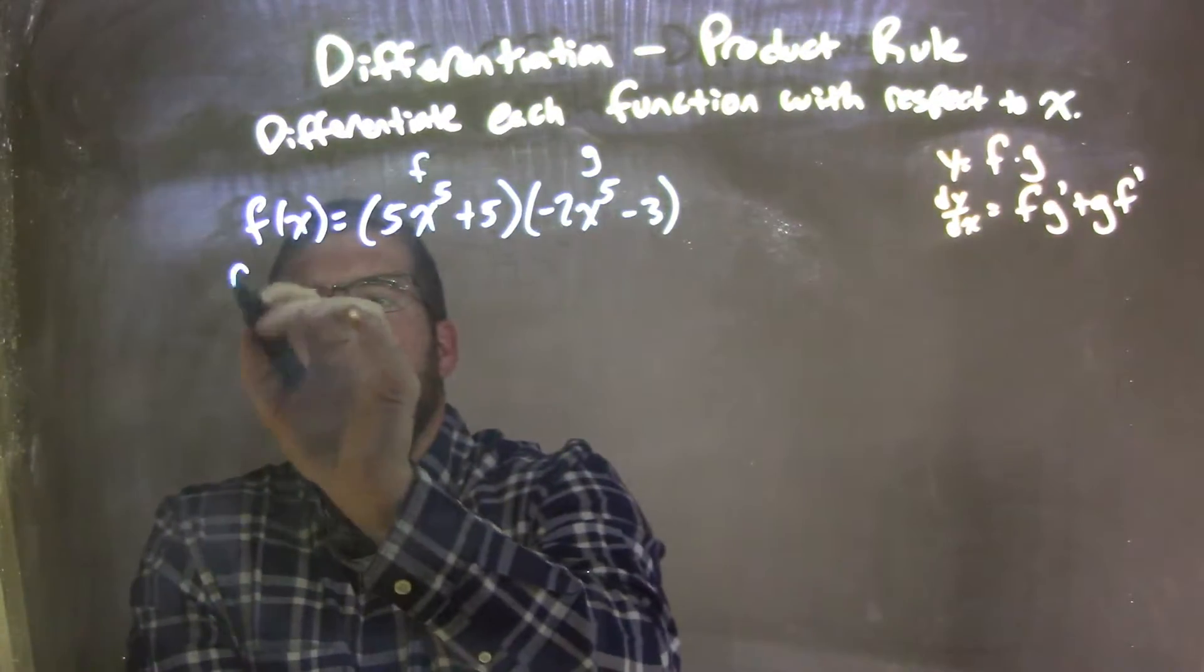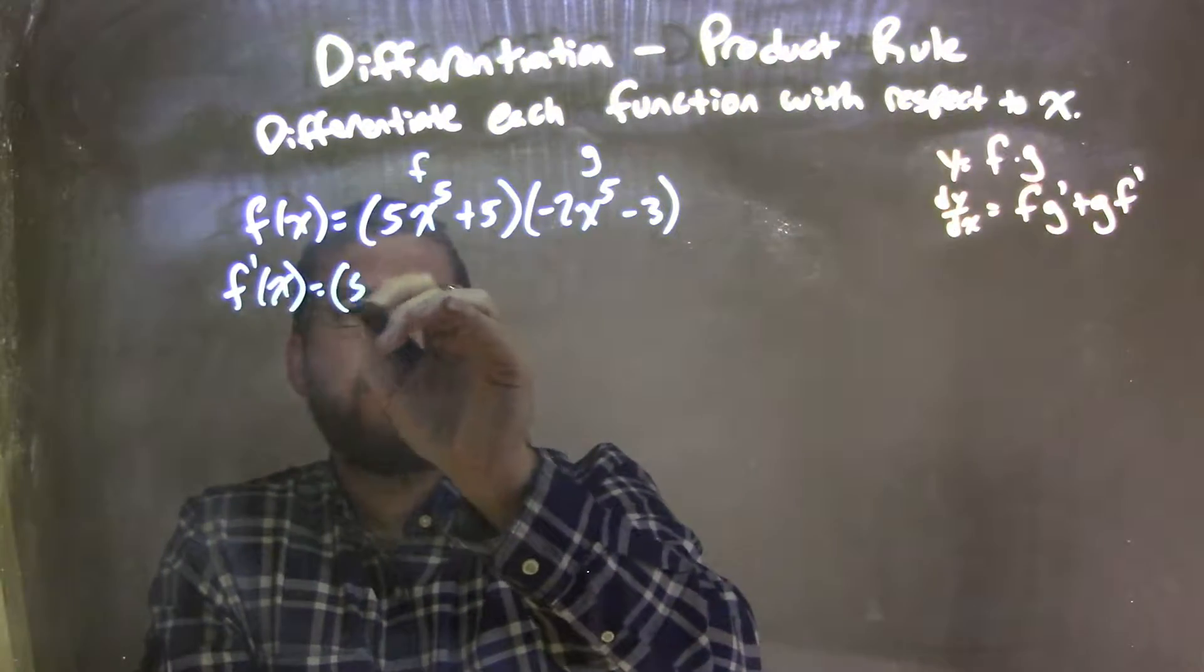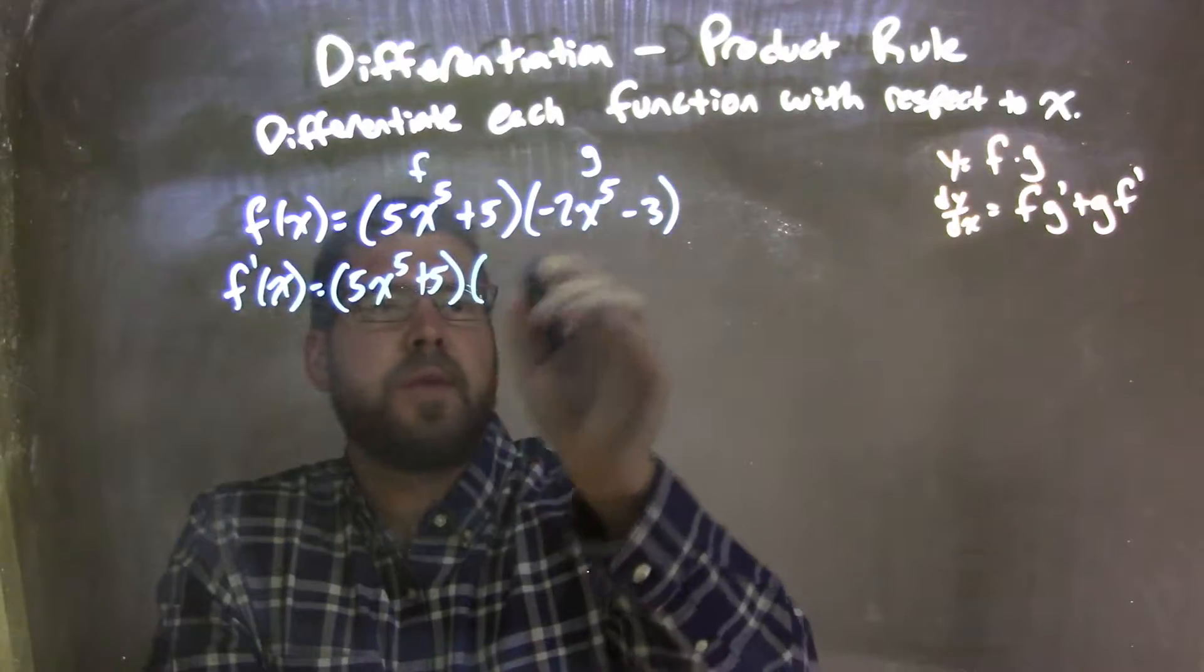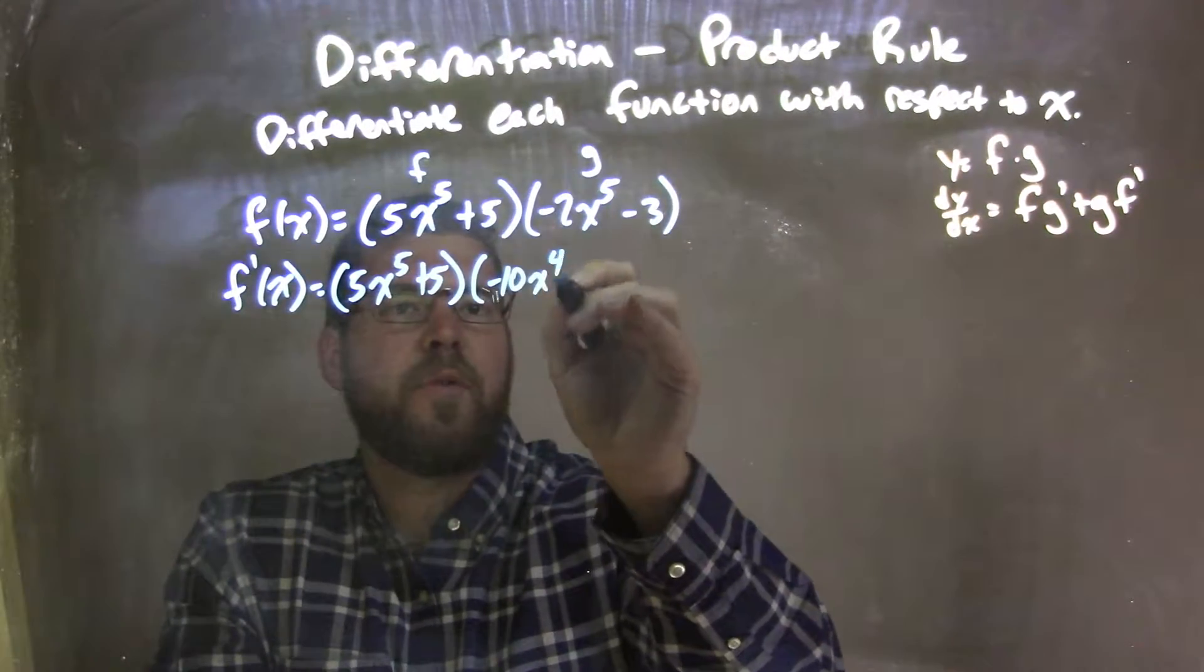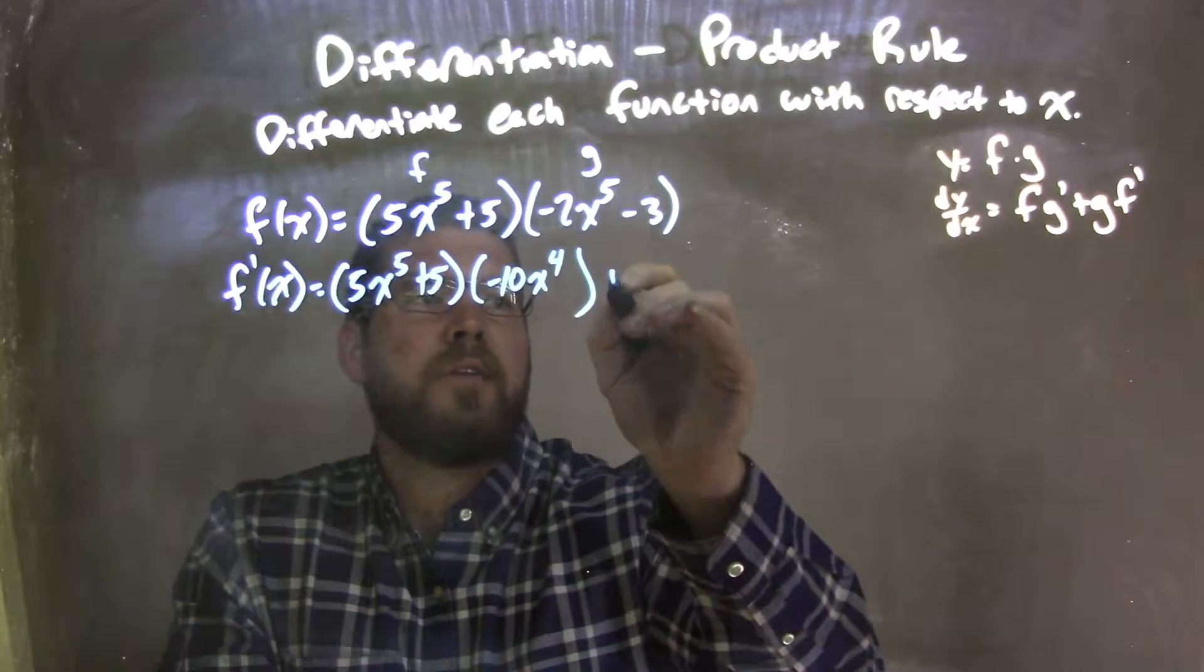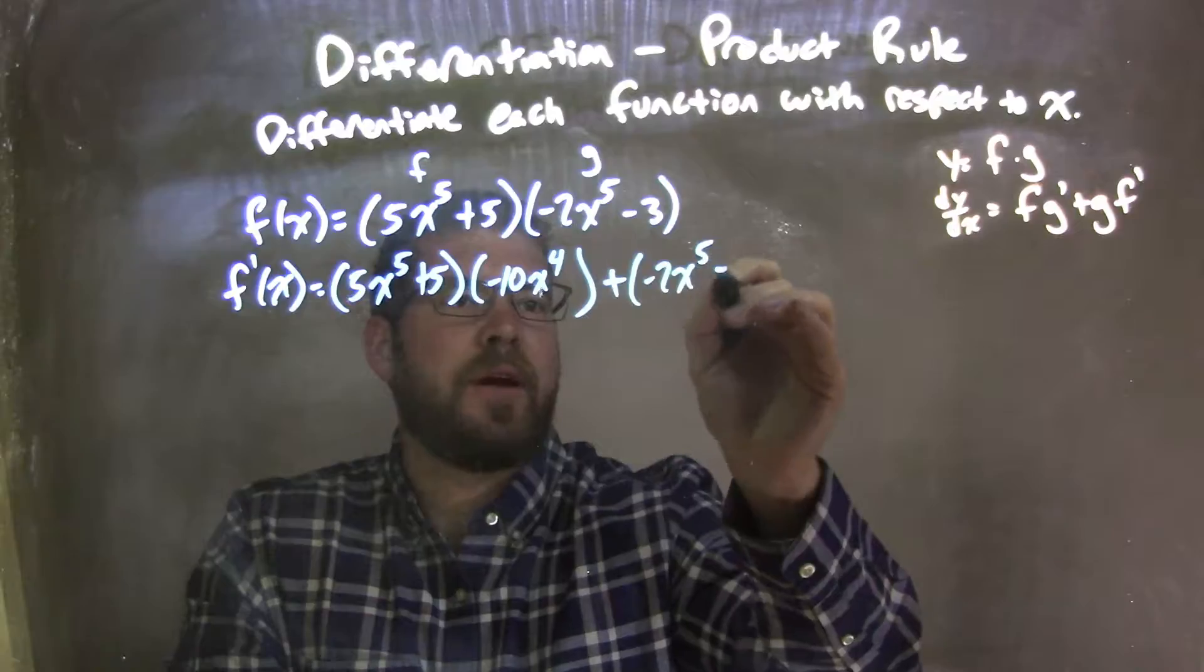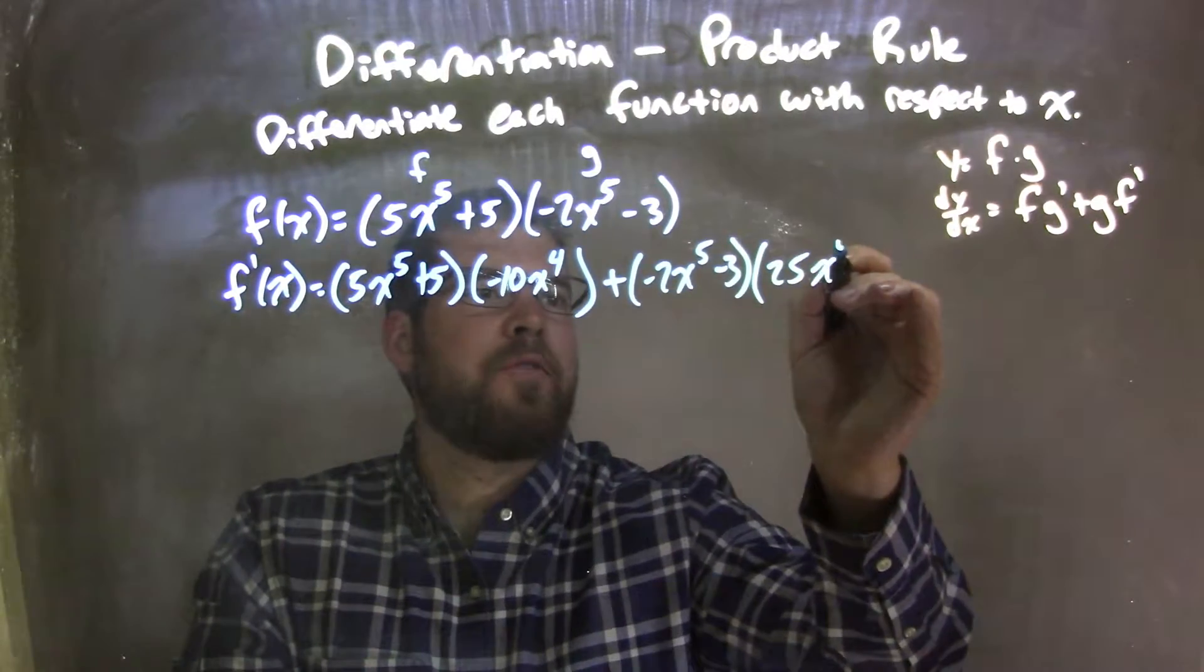So I apply the product rule. Let's follow what's written right here. f, 5x to the fifth plus 5 times g prime, the derivative of g, which is negative 10x to the fourth, plus g, negative 2x to the fifth minus 3 times f prime, which is 25x to the fourth.